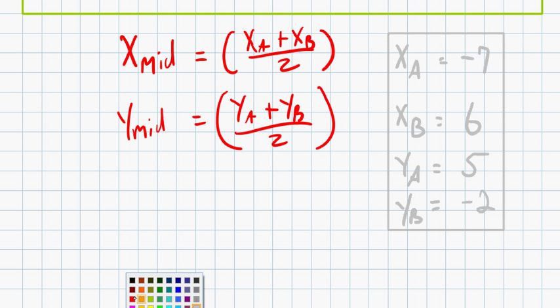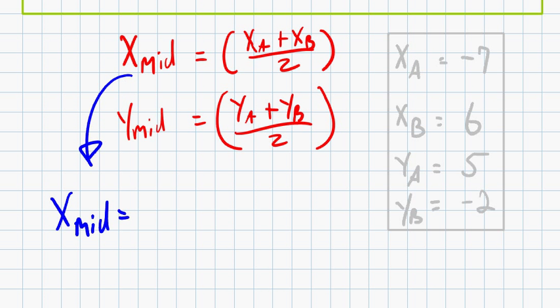So x_A is negative 7. So we're going to say x_mid equals, I just move this down here, x_mid equals, and now I know what x_A and x_B are. So that would be negative 7 plus 6 over 2, which equals negative 1 half.